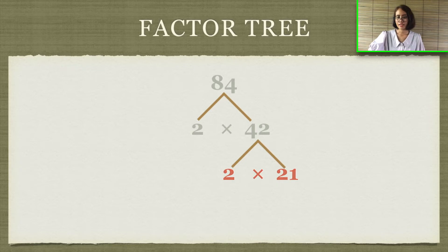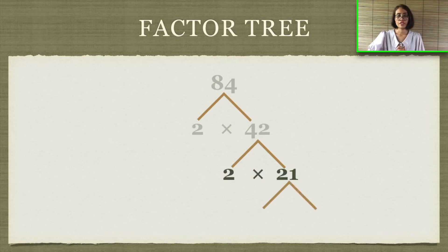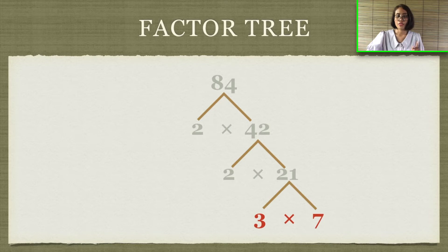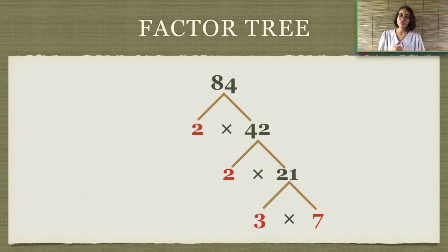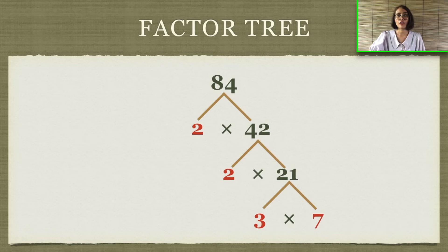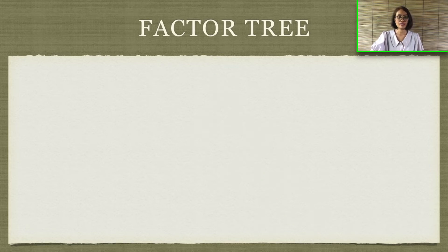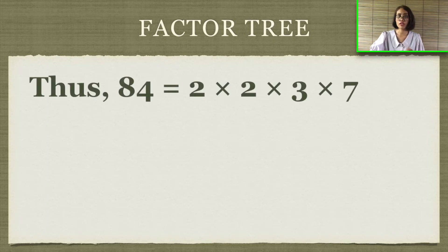Next is number 21. Can this number be divided by 2? No. So we try number 3, and yes it can be divided, so 21 is 3 times 7. Now look at the numbers in red: 2, 2, 3, and 7 — those are the prime factors of 84. So we write 84 equals 2 times 2 times 3 times 7.